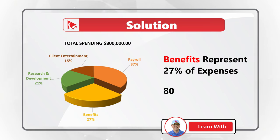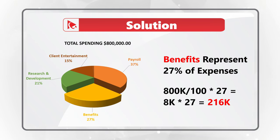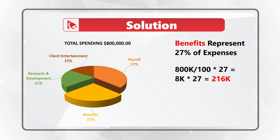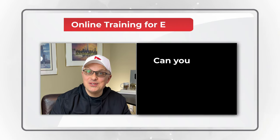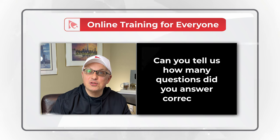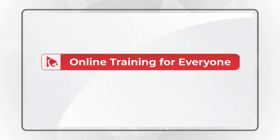To calculate the amount for benefits, we need to divide 800,000 — which is the total expense — by 100 and multiply by 27%, because benefits represent 27%. That equals 8,000 multiplied by 27, which equals 216,000. So the correct choice here is Choice B: $216,000. Can you tell us how many questions you answered correctly? Please post in the comment section. Now let's continue to get you ready for the test.